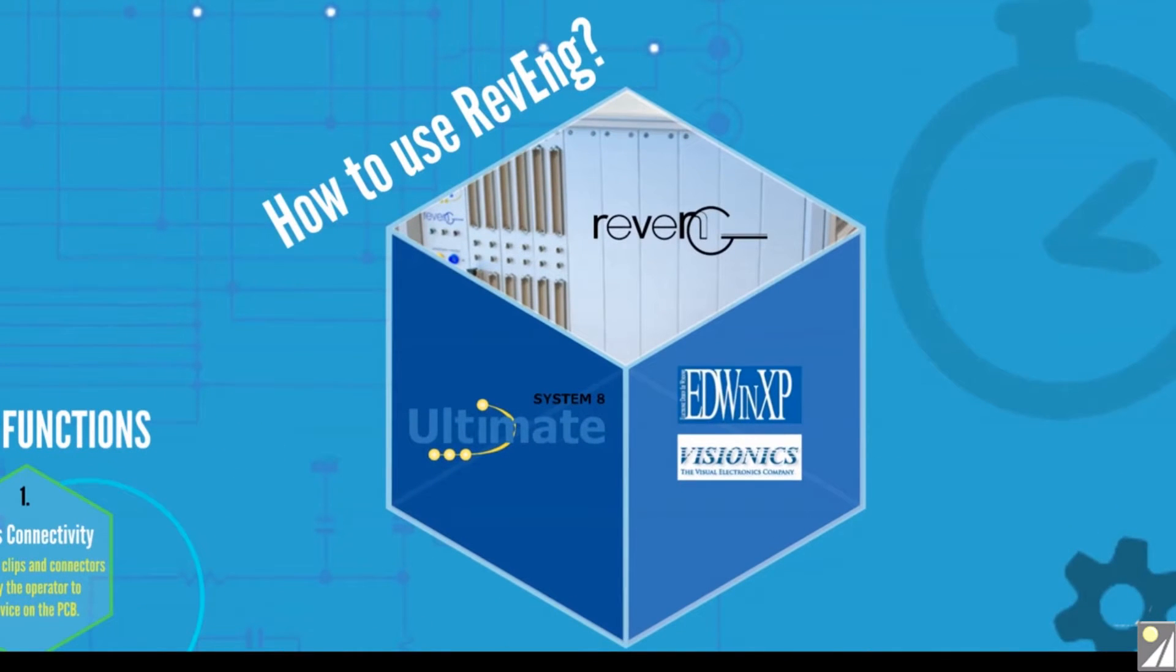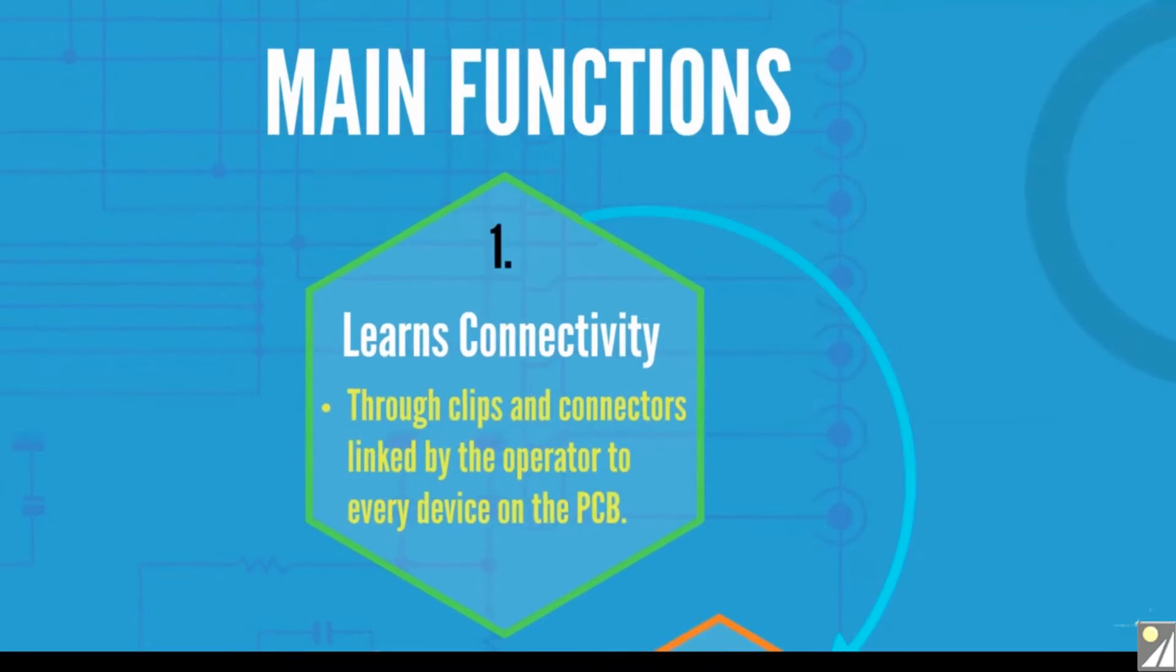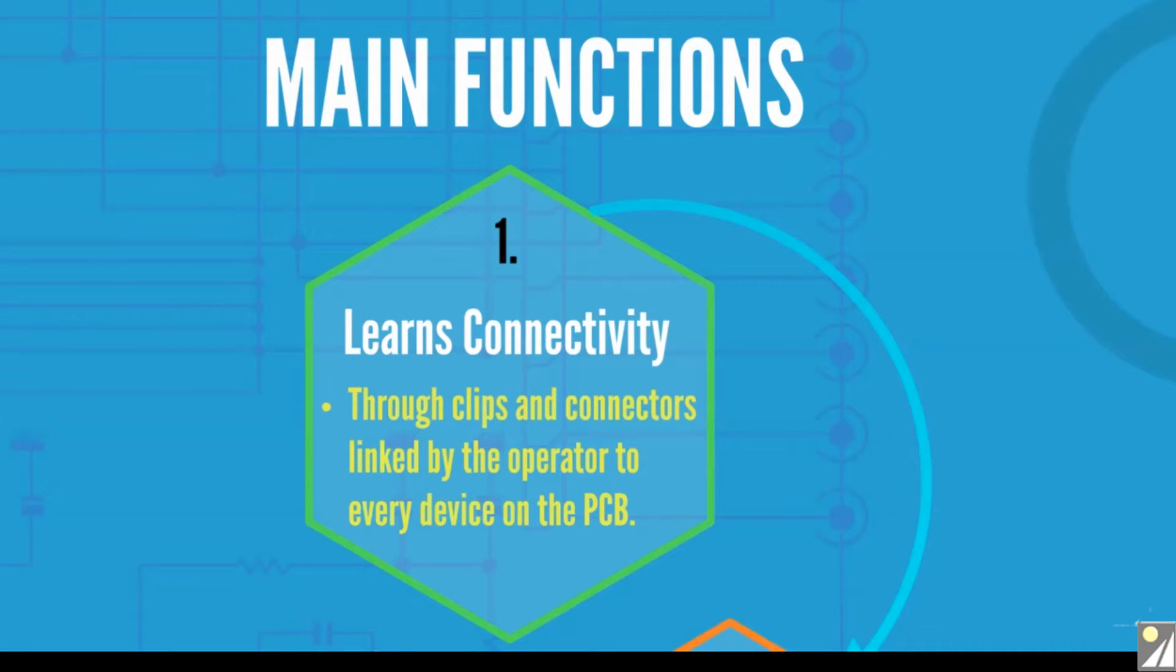How does Revenge work? Step 1: Revenge learns how devices on a circuit relate to each other by means of test clips, probes, and I.O. connectors that are attached by the operator to each device on the PCB.